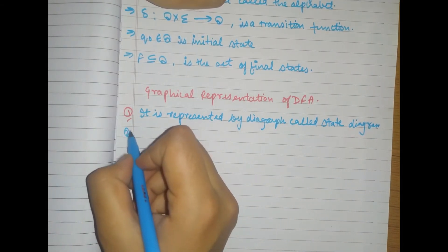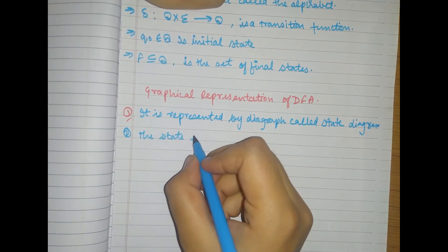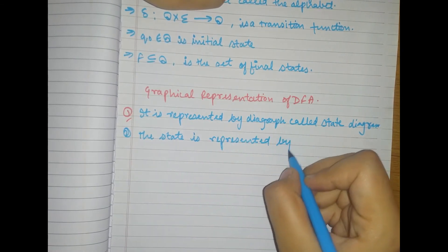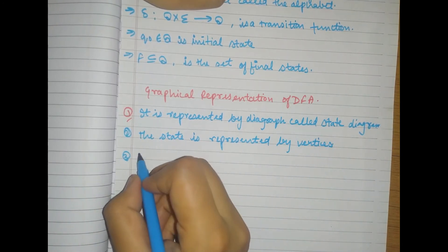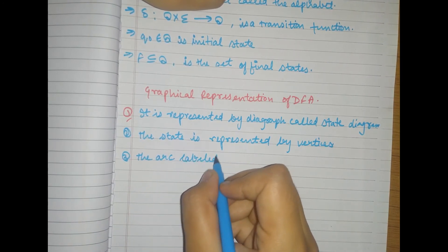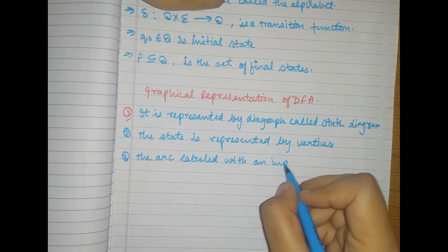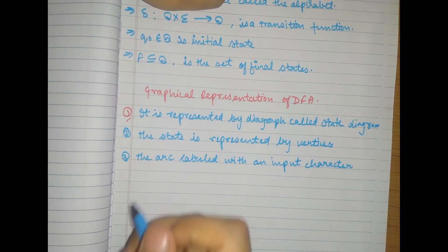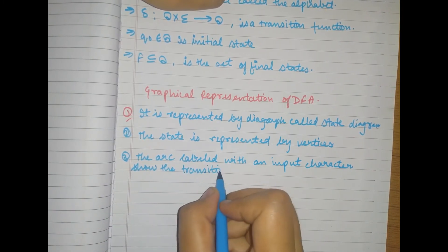Okay, so the second point is that state is represented by vertices. The arc labeled with an input character show the transition here.